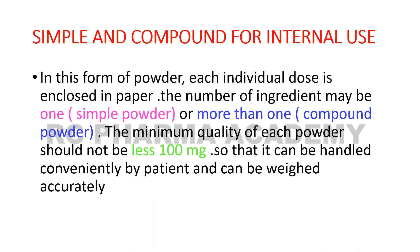This is the form of powder where the individual dose is enclosed in paper. If the powder has one single ingredient, it is called a simple powder. If it has more than one ingredient, it is called a compound powder.